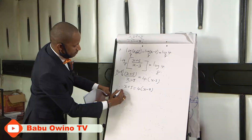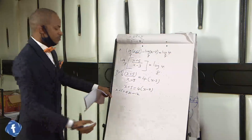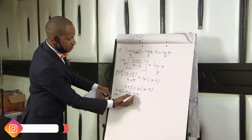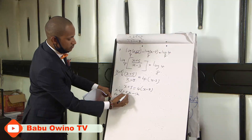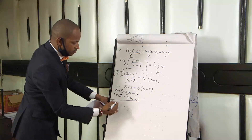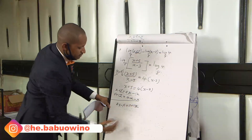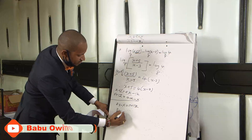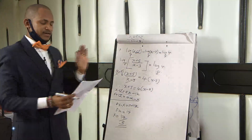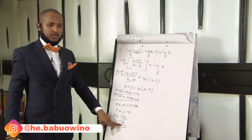From here, we have x plus 5 equals 4 times x which is 4x, and 4 times minus 3 is minus 12. Collect the like terms: 5 on this side, bring 12 to this side — it becomes plus 12. Bring x to the other side, it becomes minus x. Therefore, 4x minus x equals 5 plus 12, which gives 3x equals 17. Therefore x equals 17 divided by 3. That is the value of x — 17 over 3.